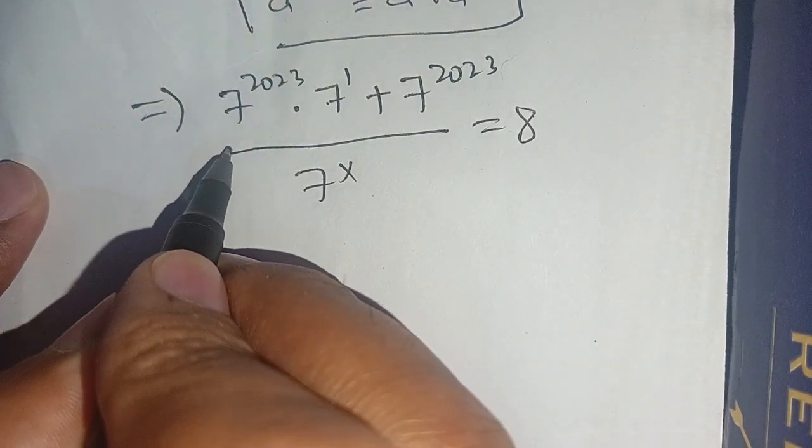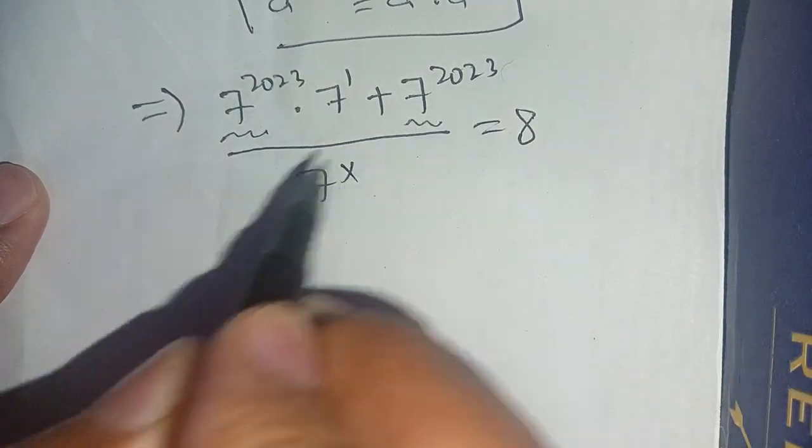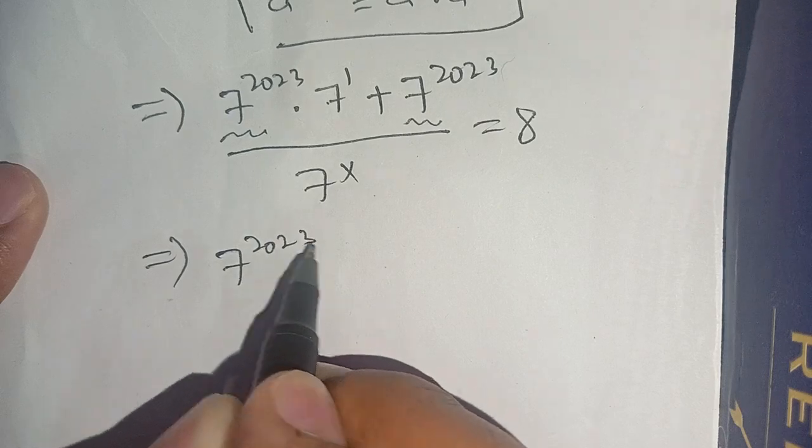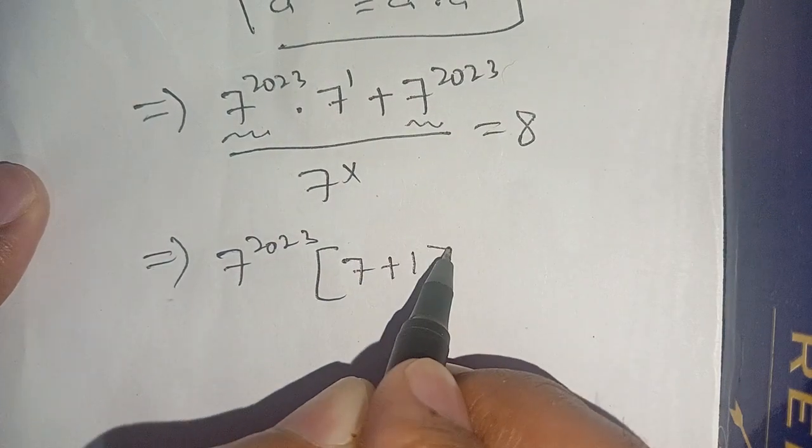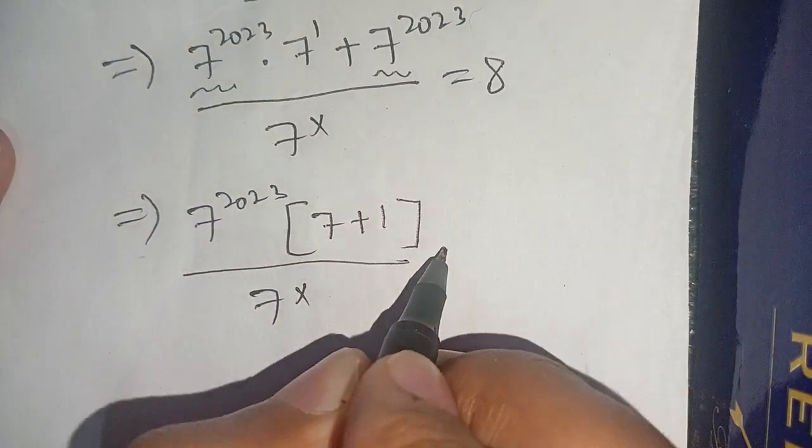Now in the next step we can take 7 power 2023 from this term as well as from this term out, and we get 7 power 2023 times (7 plus 1) divided by 7 power x is equal to 8.